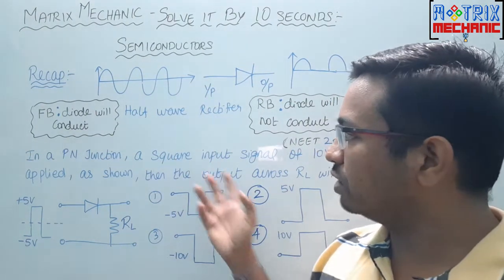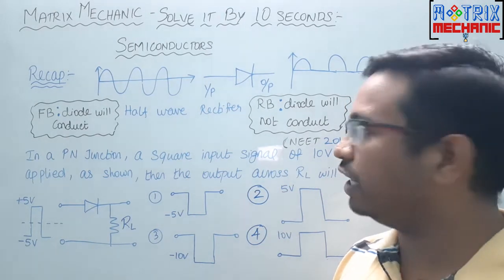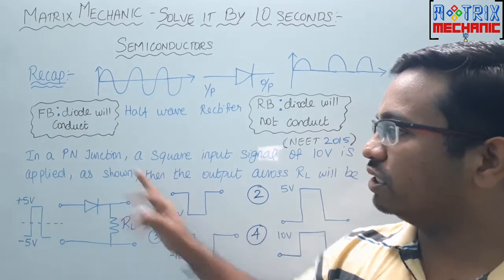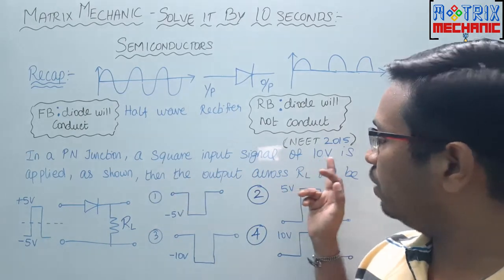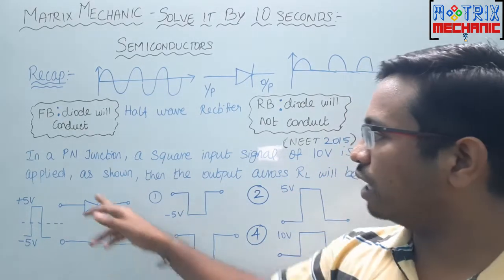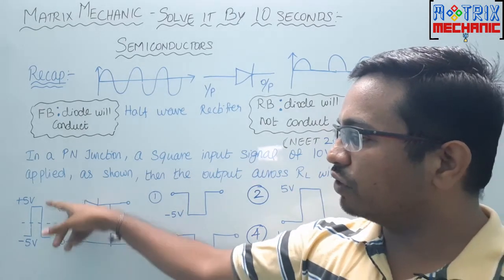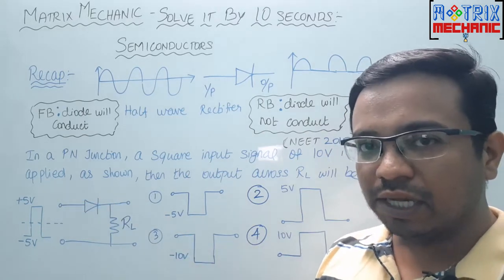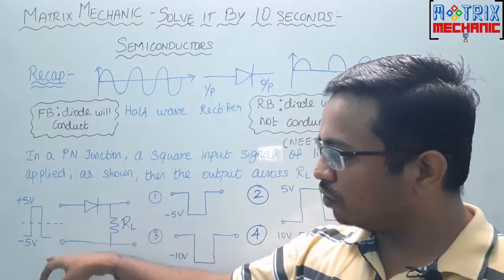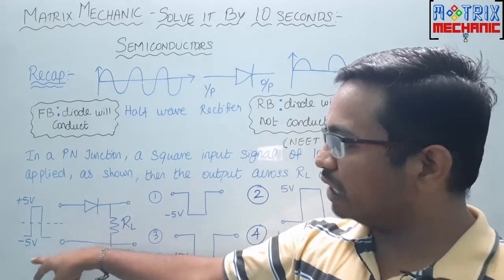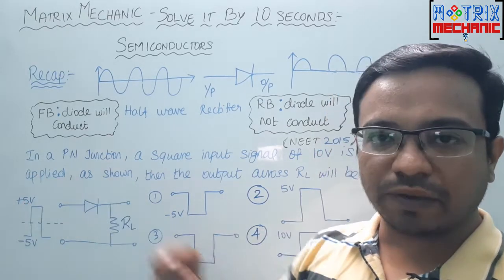Now see this question. This question has been asked in NE 2015. What is the question? In a PN junction, a square input signal of 10 volt is applied as shown in the figure. Now the 10 volt, how they are applying here is minus 5 to 5 volt. This is a zero line. So minus 5 to 0, then 0 to plus 5.